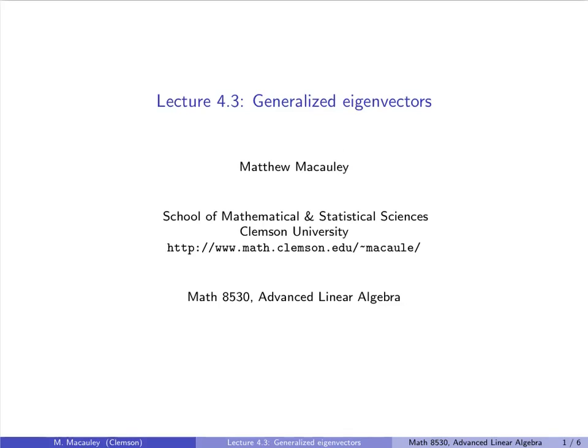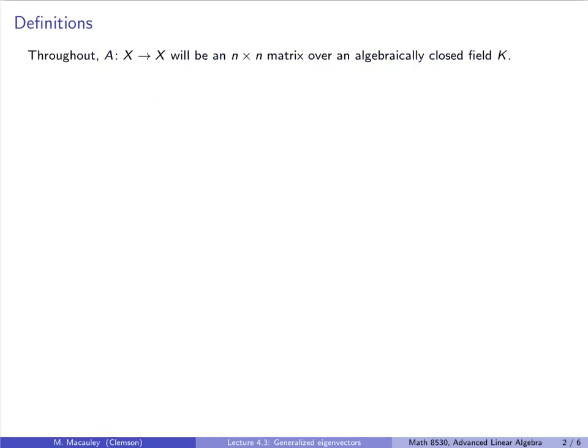Welcome to lecture 4.3: Generalized Eigenvectors. We will continue our assumption that A is an endomorphism of an n-dimensional vector space X over an algebraically closed field K, and as such we can think of it as an n-by-n matrix. We can also think of K as the complex numbers, because that's really the only algebraically closed field that we are all that familiar with.